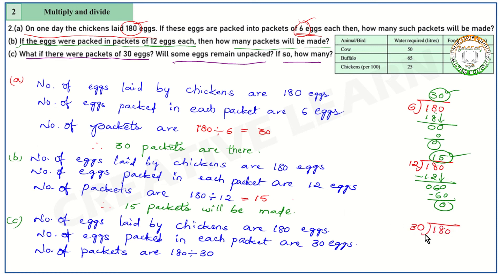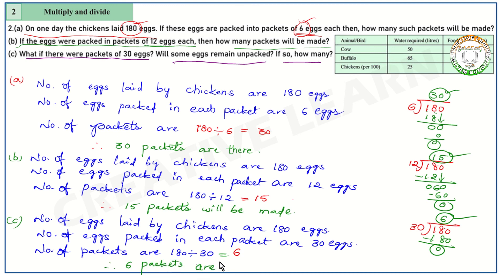Do the division: total 180 eggs, each packet consists of 30 eggs. How many times in the 30 times table? 30 sixes are 180. Subtraction gives 0. So total packets: 6. Will some eggs remain unpacked? No — all eggs were packed. This is the second question.